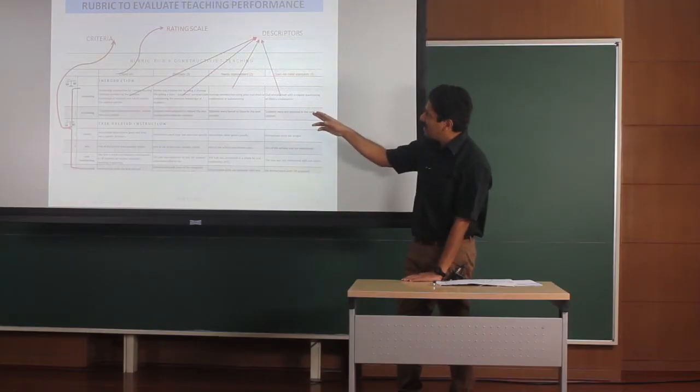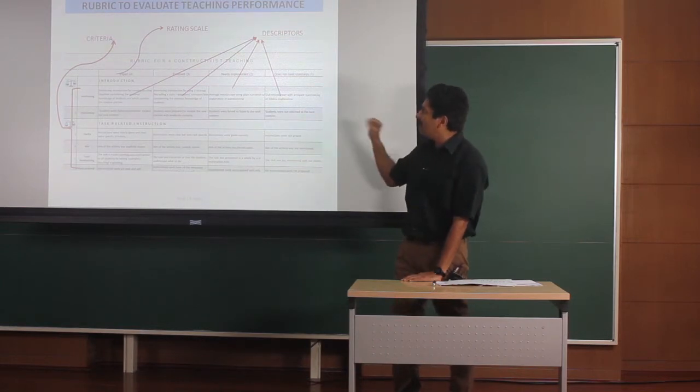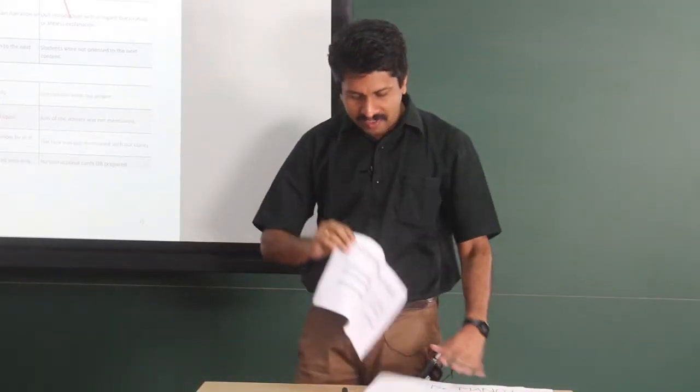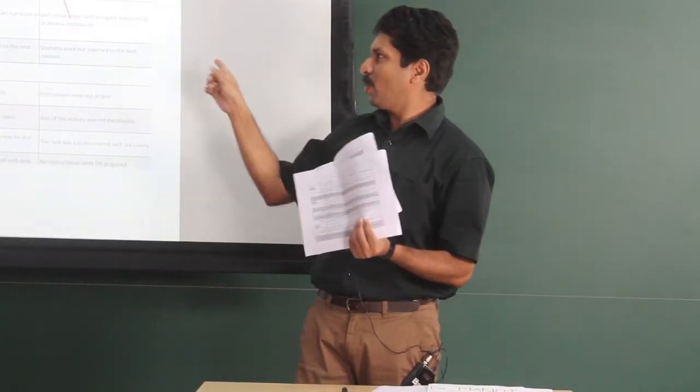Then you have the rating scale: expert, proficient, needs improvement, and does not meet standards, and every cell has a descriptor. Actually, this two-page thing is what you see over there.